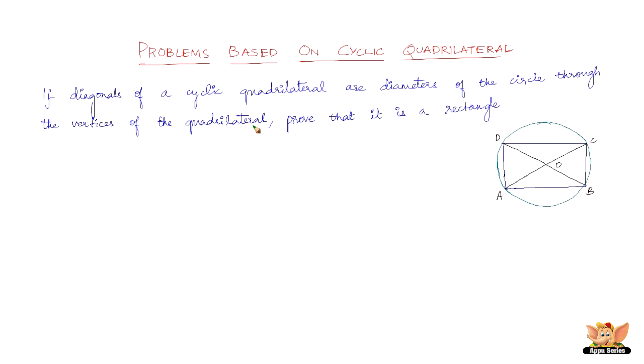...through the vertices of the quadrilateral, and most importantly, the diameters of the circle are through the vertices of the quadrilateral—that is BD and AC—then prove that it is a rectangle. If that is the case, we need...